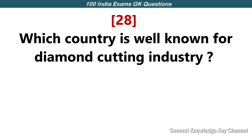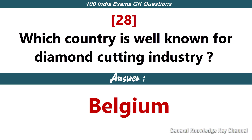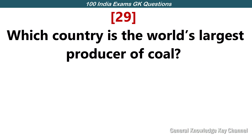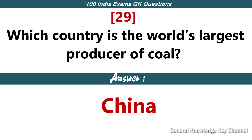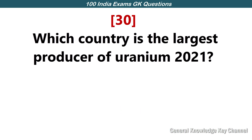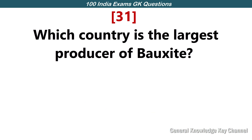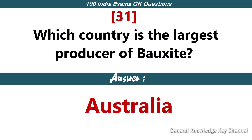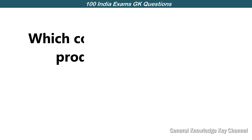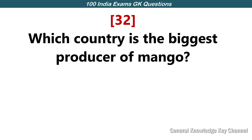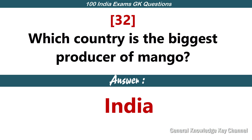Which country is well known for the diamond cutting industry? Belgium. Which country is the world's largest producer of coal? China. Which country is the largest producer of uranium (2021)? Kazakhstan. Which country is the largest producer of bauxite? Australia. Which country is the biggest producer of mango? India.